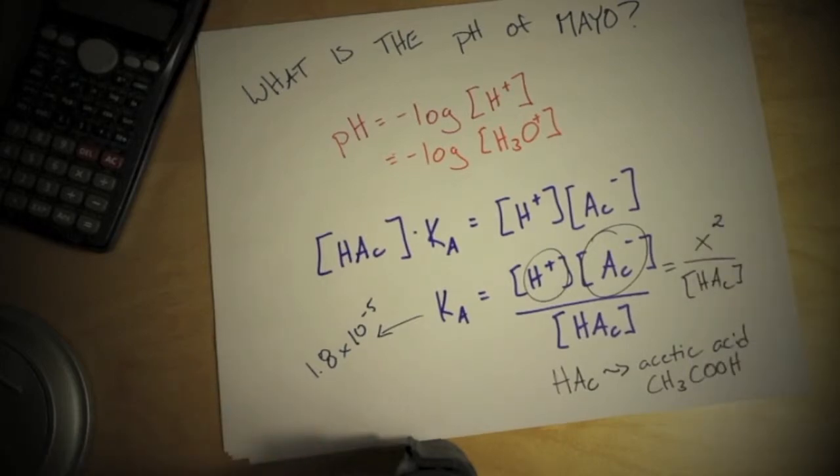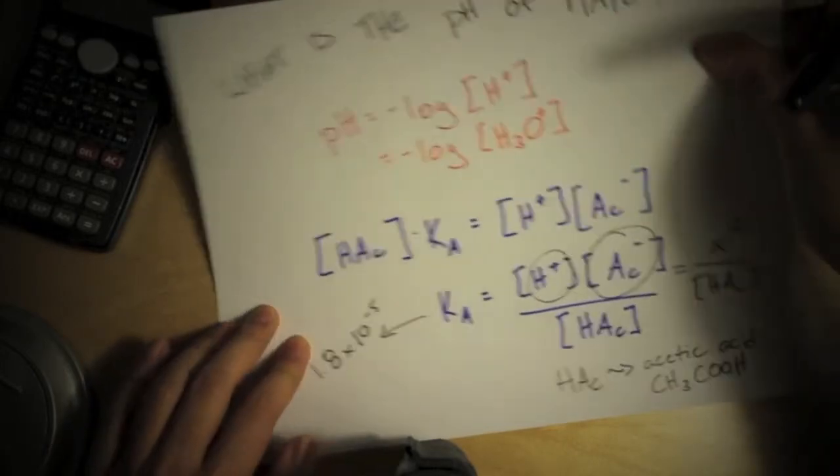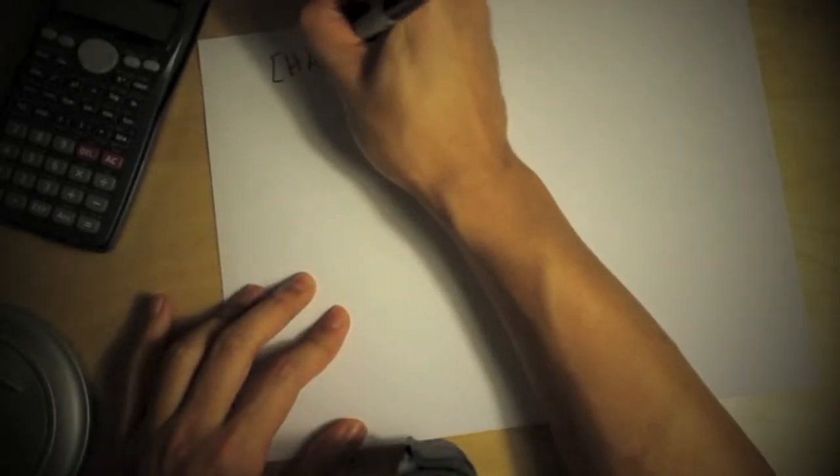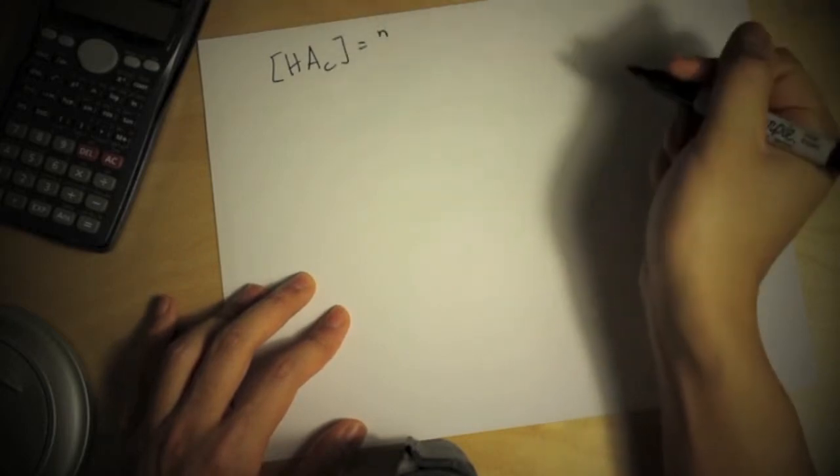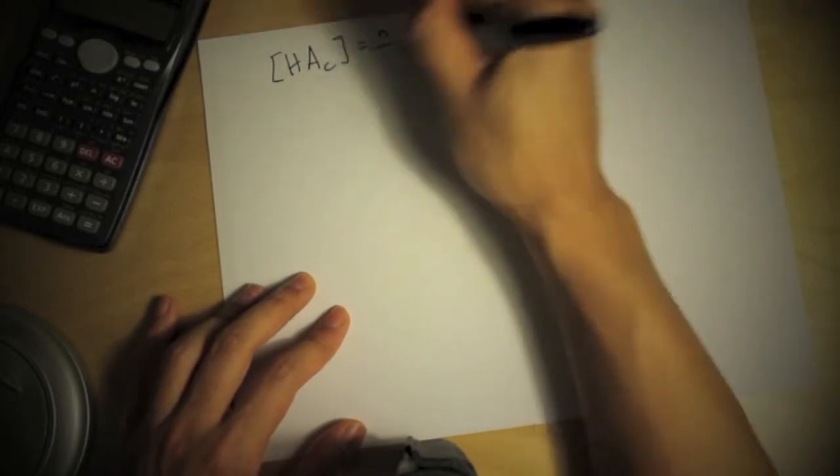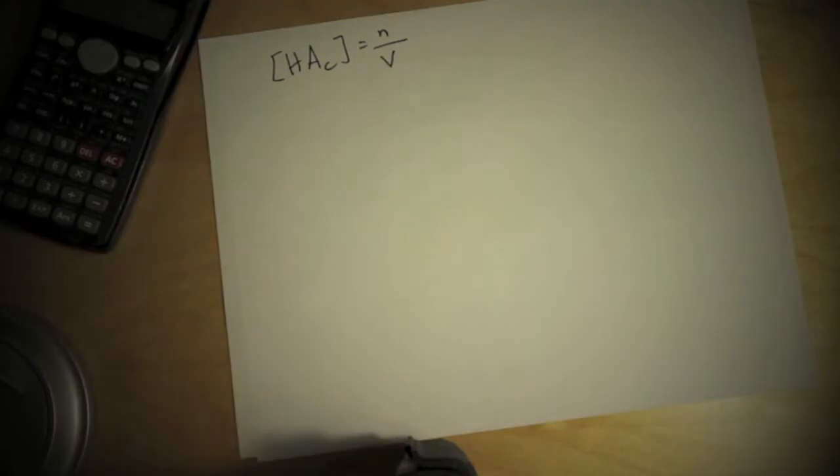But how about that concentration of the molecule itself? Well we're going to do a little bit more work for that one. So let's talk about that concentration. If I write down concentration by definition, it's the number of things, usually moles, divided by total volume.